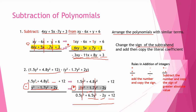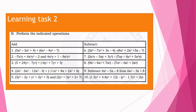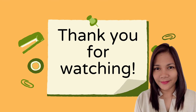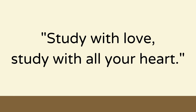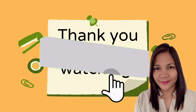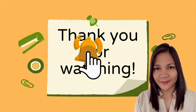Remember to follow the rules: do not forget to change the sign of the subtrahend, then add following the rules for addition of polynomials. It is now time for you to answer Learning Task 2, letter B — perform the indicated operation, 10 items. Hopefully you learned how to add and subtract polynomials. Thank you for watching — always study with love and with all your heart. Please like, share, and subscribe for more updates. Stay safe, God bless!